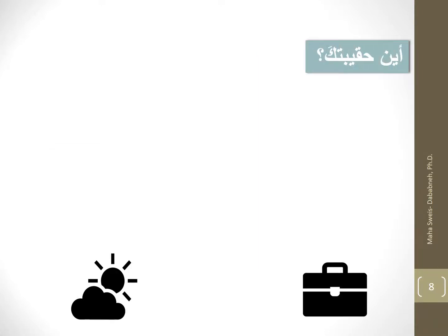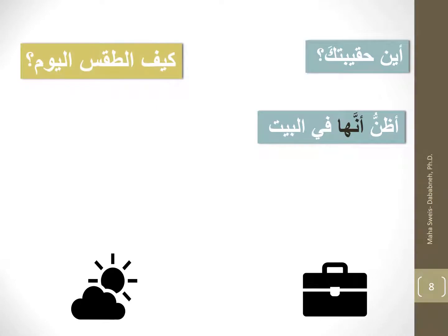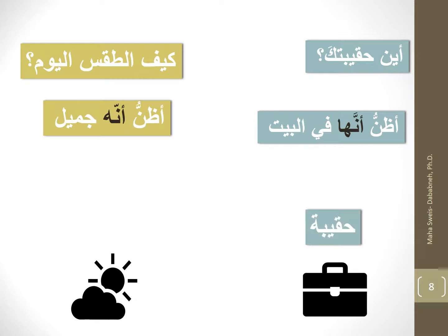I just want to remind you of something before I finish. When we say أين حقيبتك؟ and answer أظنّ أنّها في البيت — remember, حقيبة is feminine, that's why we use the suffix ها. كيف الطقس اليوم؟ — الطقس is masculine, that's why أظنّ أنّه جميل. So if your noun is masculine, use هو (هُ). If your noun is feminine, use ها. Just pay attention to gender agreement.